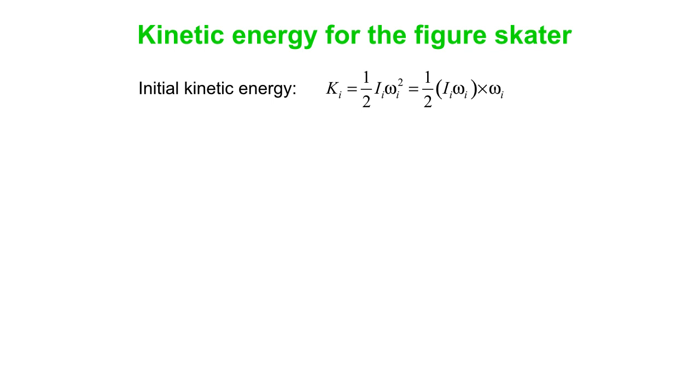And for some strange reason, which should be apparent in a minute, I'll write this in the following way. One half I times omega, and then separately we've got another factor of omega outside that bracket. So one half I omega times omega. Final kinetic energy we will write in the same kind of funny format. One half I final omega final squared, which is equal to one half I final omega final times omega final.